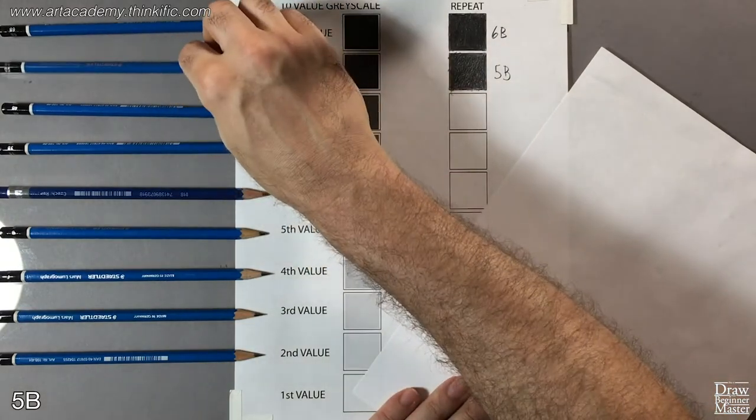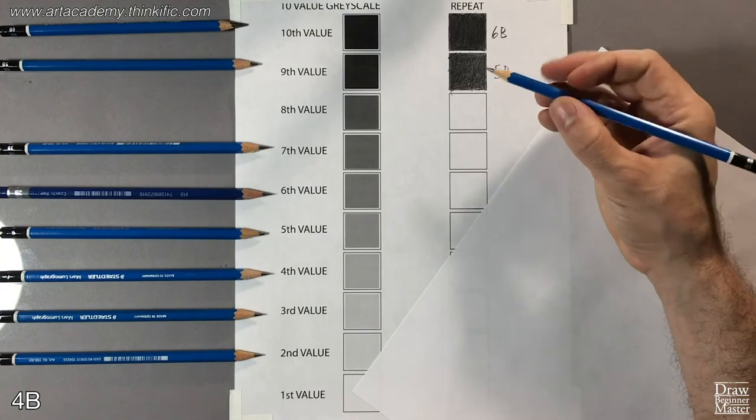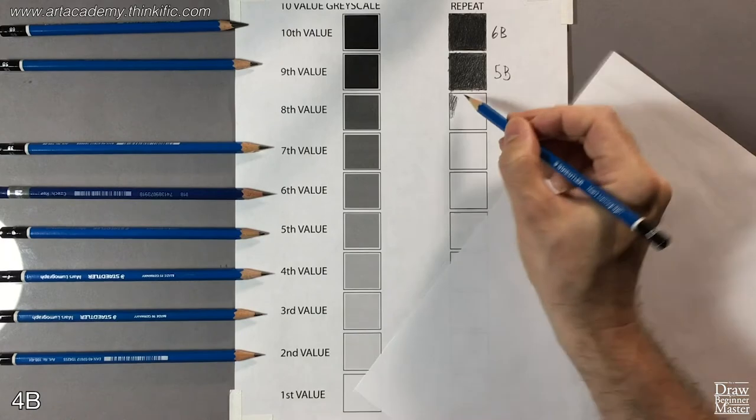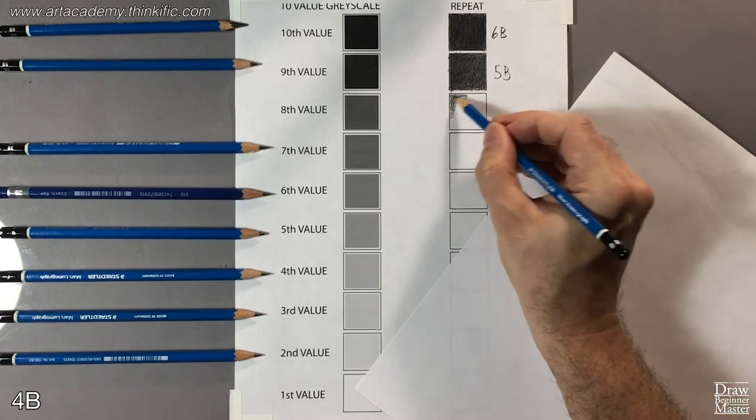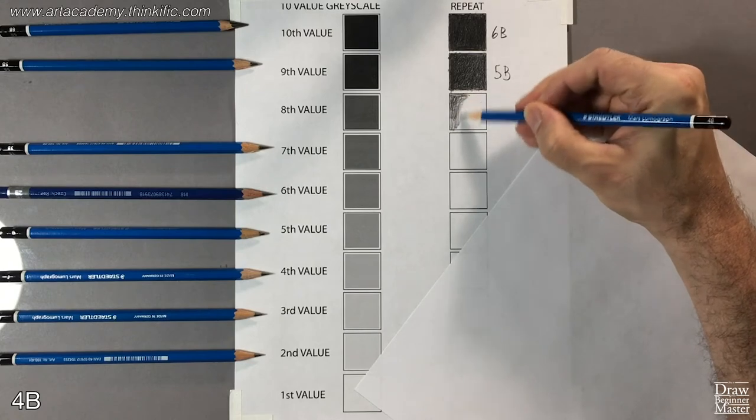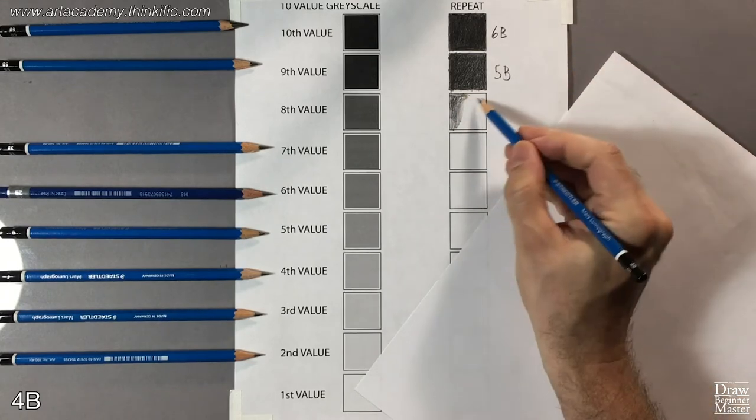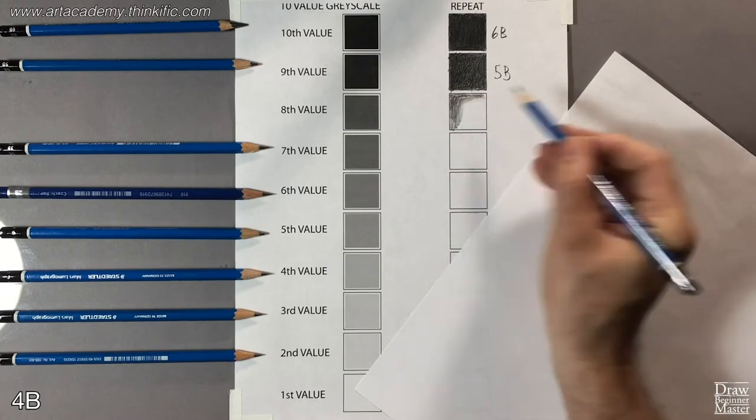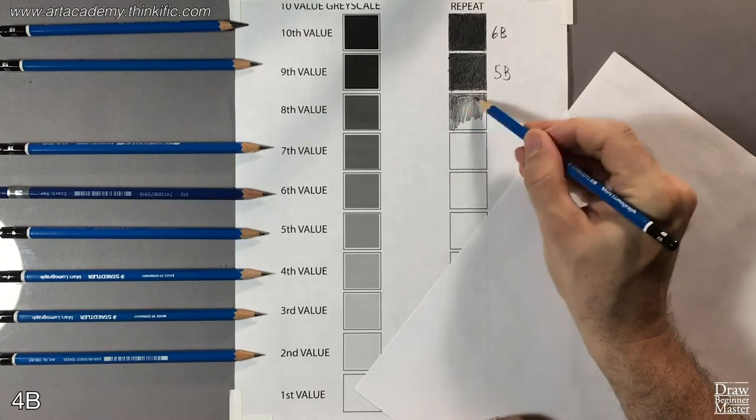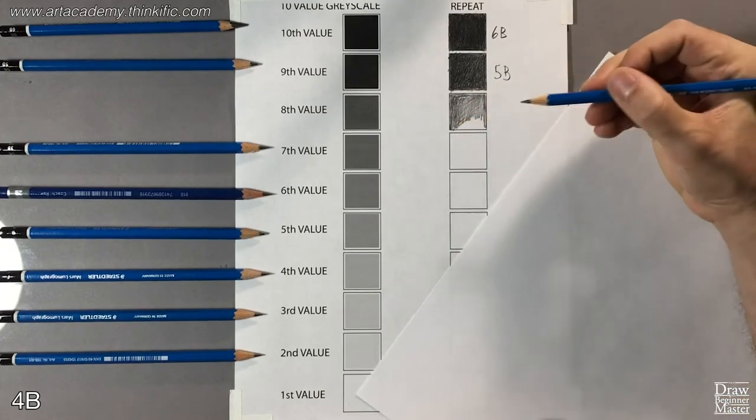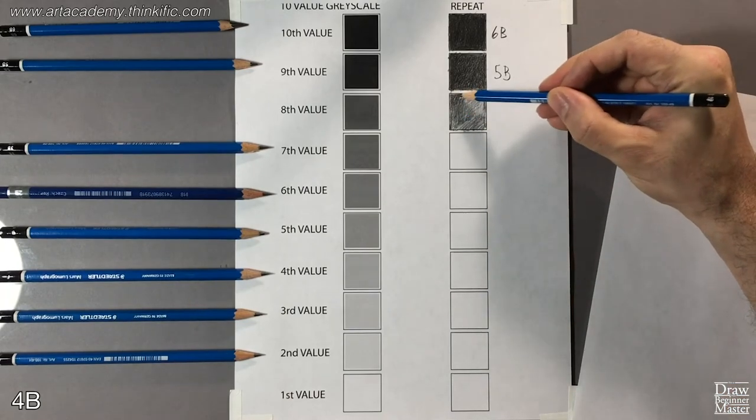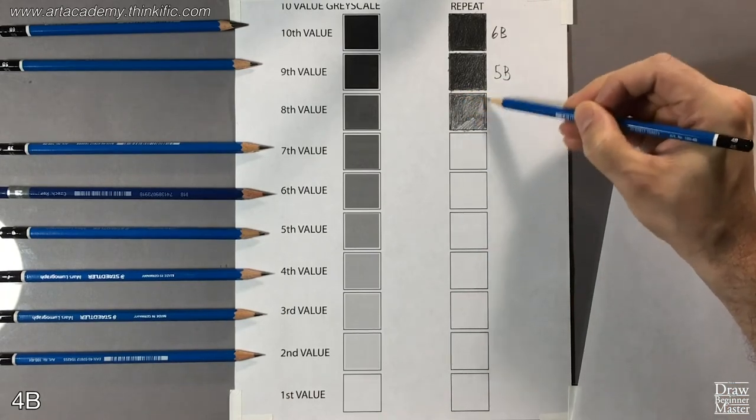For 8th value, I'm going to switch to a 4B pencil. I'd like to take advantage of this time while I work to start talking about the different types of shading. For example, what I'm doing right now is called scumbling, which is just making concentric circles. It's easiest to do with softer leads, but doesn't tend to look good with the harder leads. The challenge with darker values is to try to keep them consistent, so try not to leave dark or light patches. Once we get to the lighter values, we'll start using harder leads, so we'll start to use a hatching and cross-hatching approach to shading in the value. I'll talk more about those techniques as we progress.